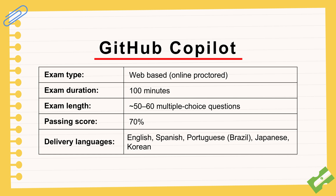So what are the basics of the exam itself? Well, it's web-based, online proctored, takes about a hundred minutes, give or take. You're looking at around 50 to 60 multiple choice questions. The passing mark is 70%. It's available globally in English, Spanish, Portuguese for Brazil, Japanese, and Korean. So even just that basic structure gives us clues about what they think is really crucial knowledge.